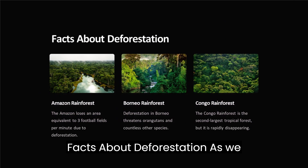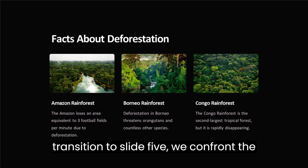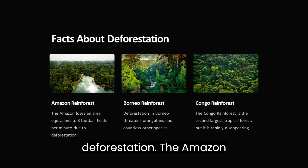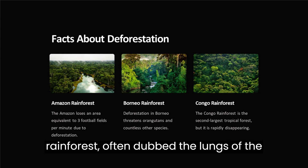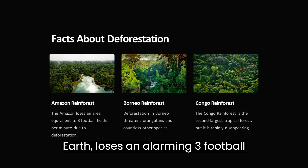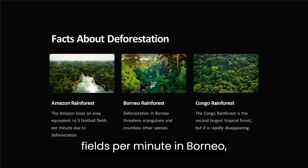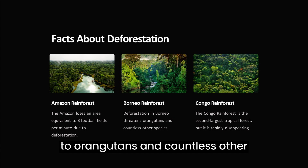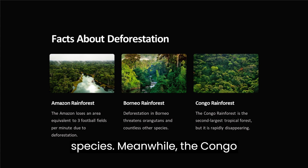As we transition to slide 5, we confront the harrowing facts surrounding deforestation. The Amazon rainforest, often dubbed the lungs of the earth, loses an alarming three football fields per minute. In Borneo, deforestation poses an existential threat to orangutans and countless other species.